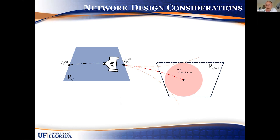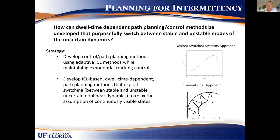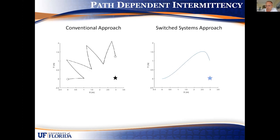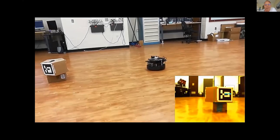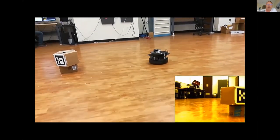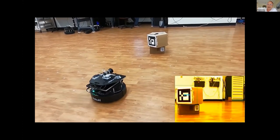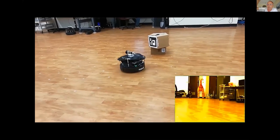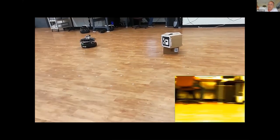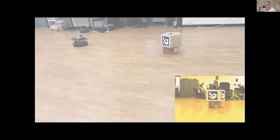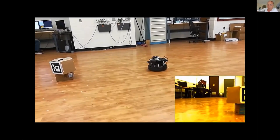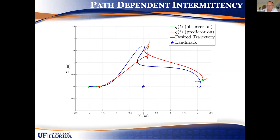I can use this to my advantage and plan paths that allow the target to go out of the field of view. Here's a very preliminary experiment: instead of doing a drive-forward-and-back-up trajectory to keep the target in the field of view, I just drive around it until my dwell time condition says I need to look at it again. Then I turn to look, and that prediction error of where to turn to look is built into the analysis and the timing. Then I can continue around the box. This is the trajectory of that approach.